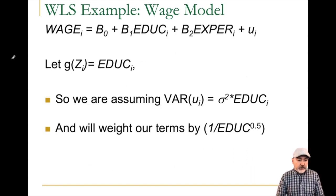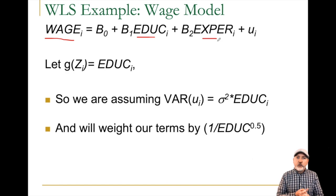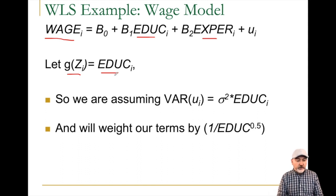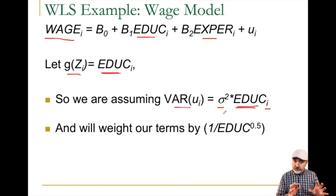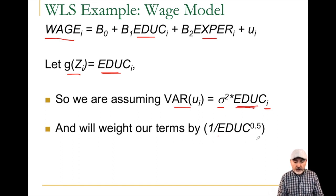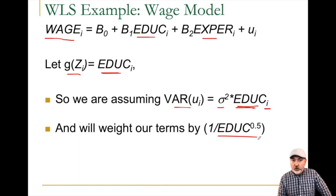Going back to our wage model as a function of education and experience: we saw previously that we have a heteroscedastic error, and we could pin it largely on variation in education. For the purposes of our example, let's assume that g of z is simply education — the variance of the error term is proportional to the individual's level of education. It's constant sigma-squared times education sub i, so the only reason sigma-squared varies across i is because of education.